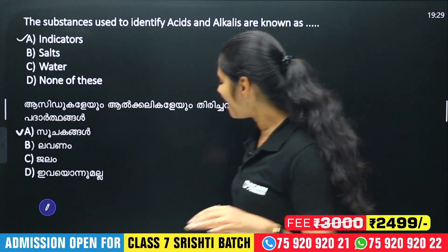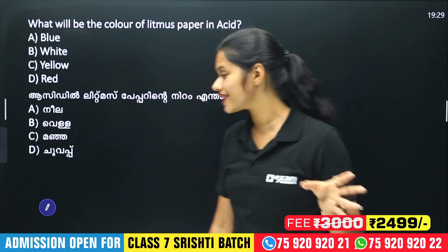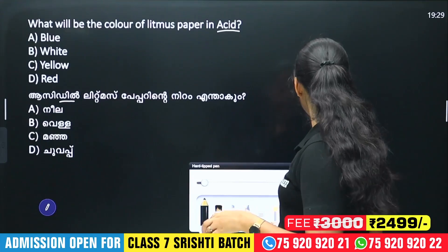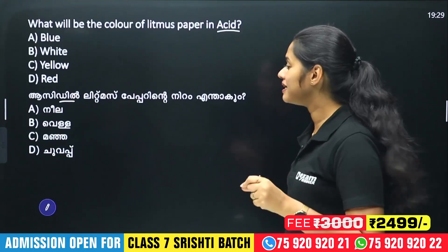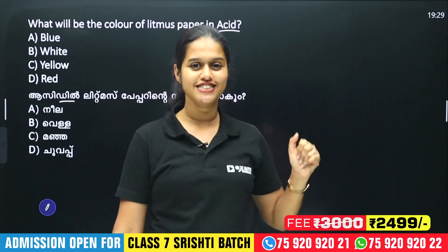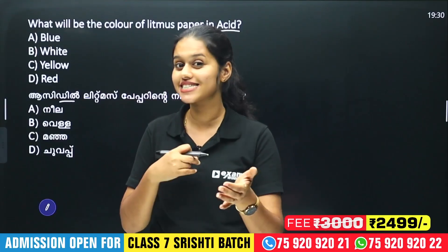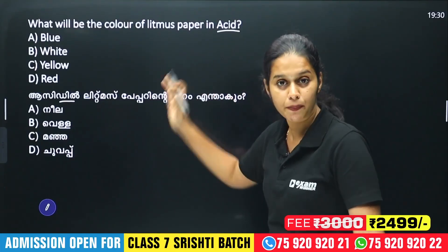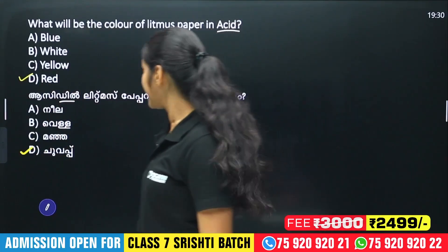Three questions now. What will be the color of litmus paper in acid? If we use a blue litmus paper and dip it in acid, the color of that litmus paper turns red. If you have a red litmus paper and dip it in acid, the color remains red. So we select Option D — red.